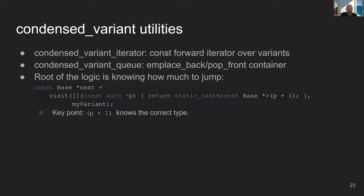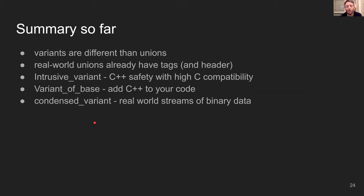There's a question: is the main motivation of intrusive variants to use less memory, or is there some other motivation? As I mentioned, it's not about memory so much because the tag just moves from one place to another. The main motivation is to be more backwards compatible with older formats — to let me control the values of the tags. Sometimes I know that the tag for a pixel is the letter P, for a vertex is V, and for a triangle is T — not just numbers zero, one, two.